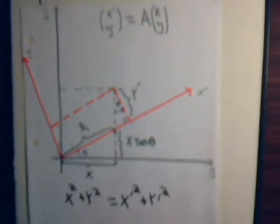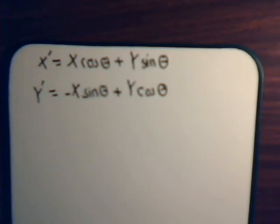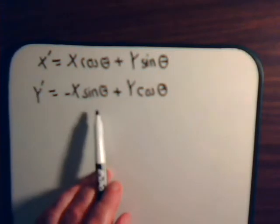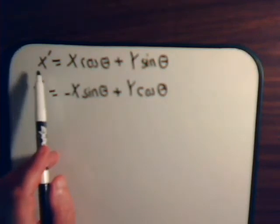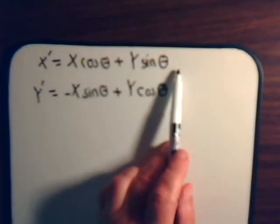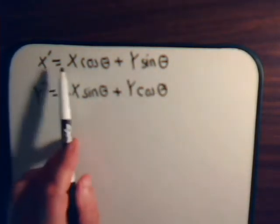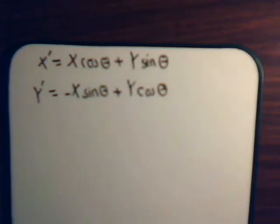Here are the equations that we derived — I think that was video number 30. Let's see if we can get an expression for x and y in terms of x prime and y prime. If we multiply the first equation on both sides by the sine of theta, this will give us x sine of theta cosine of theta — which we might be able to cancel out. So let's try that.